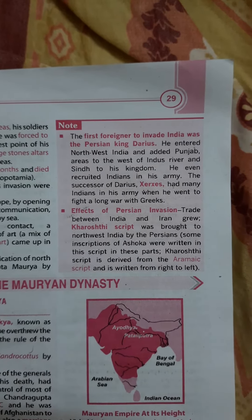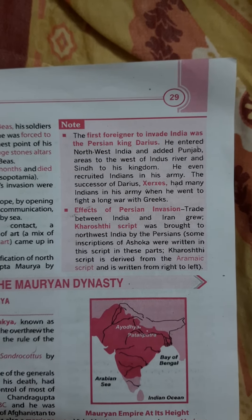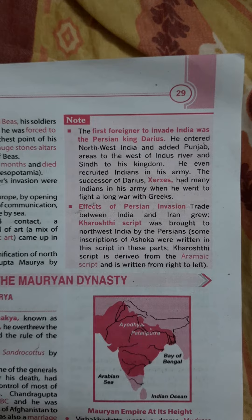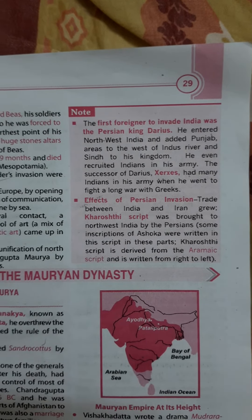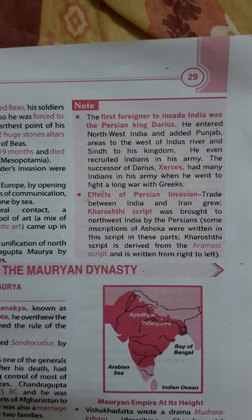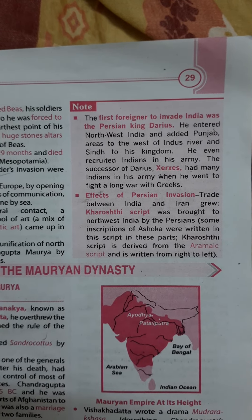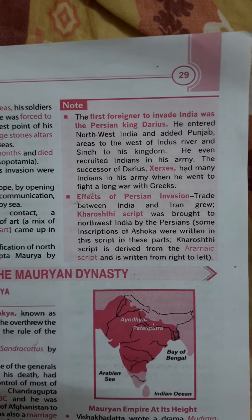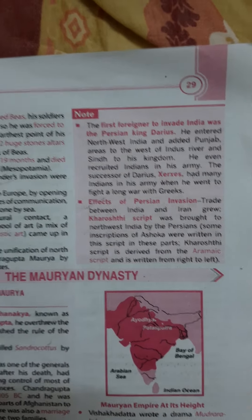The effects of the Persian invasion included the growth of trade between India and Iran. The Kharosthi script was brought to northwest India by the Persians, and some inscriptions of Ashoka were written in this script in these parts. The Kharosthi script is derived from the Aramaic script and is written from right to left.